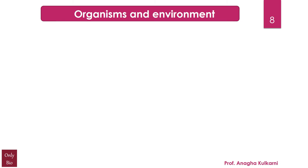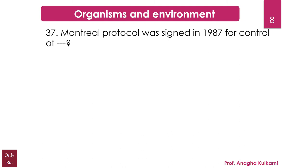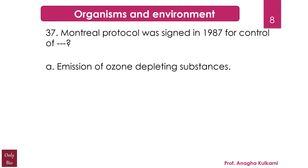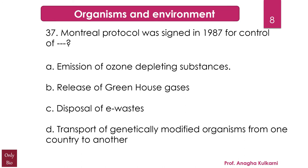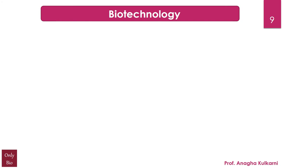The next question relates to the chapter Organisms and Environment. The Montreal Protocol was signed in 1987 for the control of — options: A) emission of ozone-depleting substances, B) release of greenhouse gases, C) disposal of e-wastes, D) transport of genetically modified organisms from one country to another. The correct answer is A. The Montreal Protocol is an international treaty designed to protect the ozone layer by phasing out production of substances responsible for ozone depletion.